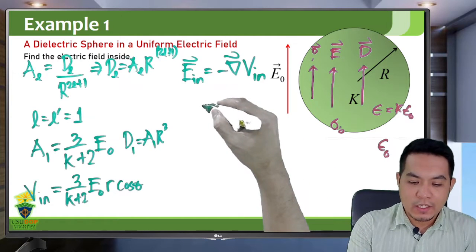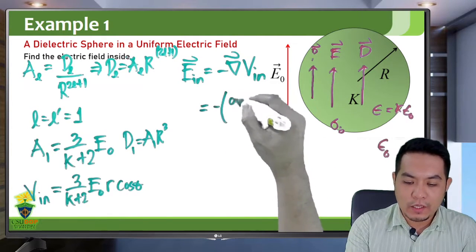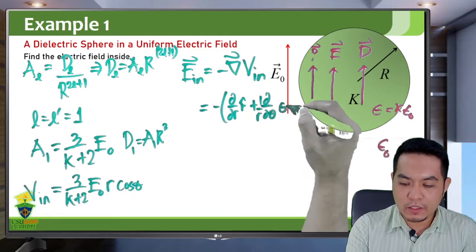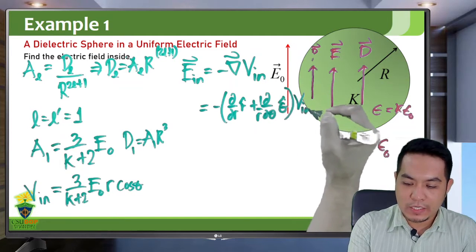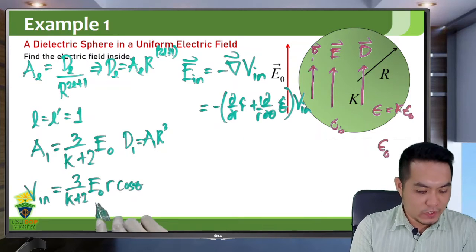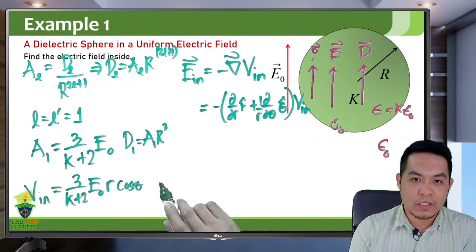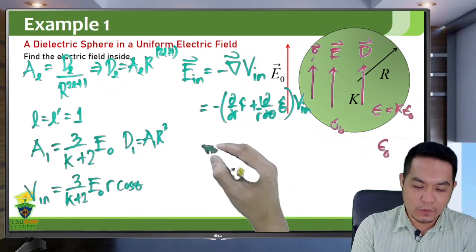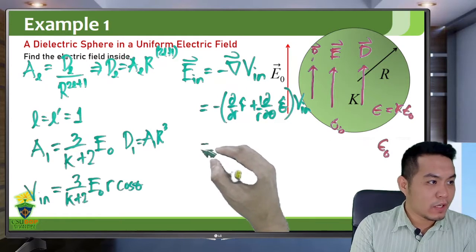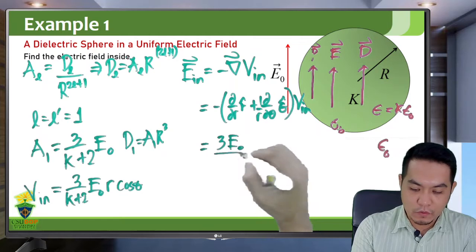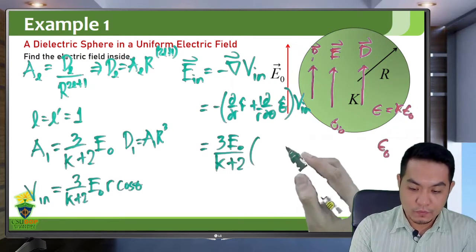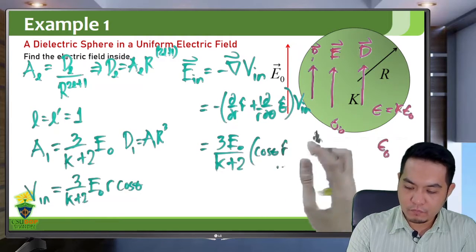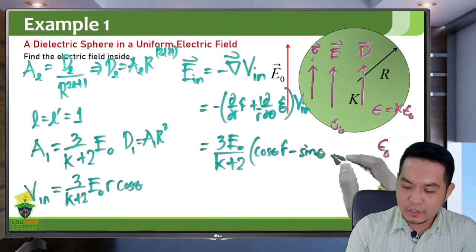The electric field inside is the negative gradient of the potential inside. In spherical coordinates, the gradient operator has components: partial with respect to R times R-hat, plus (1/R) times partial with respect to θ times θ-hat. Taking the derivative with respect to R gives the R-hat component; taking the derivative with respect to θ gives the θ-hat component. This yields the combination: 3/(K+2) times E₀ times (cosθ R-hat minus sinθ θ-hat).